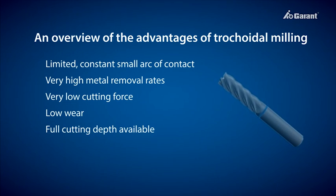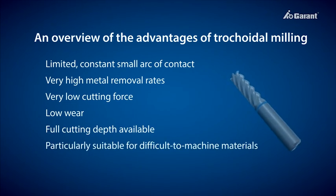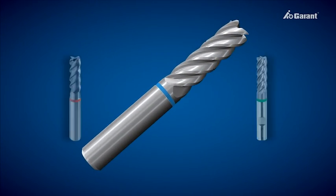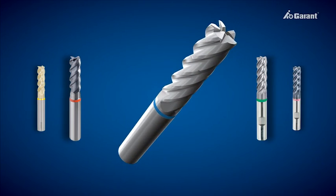Trochoidal milling is particularly well suited to difficult to machine materials. The greatest benefits are achieved for hard machining and for machining stainless and superalloy materials.